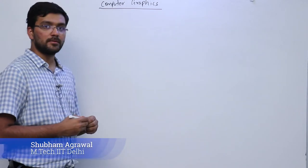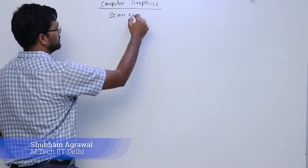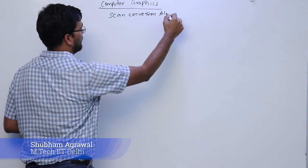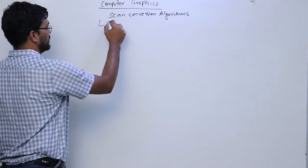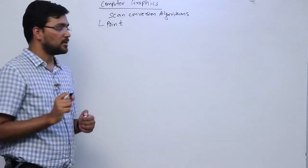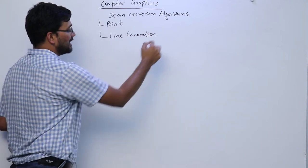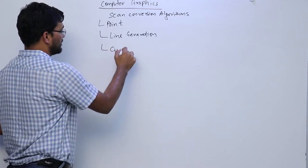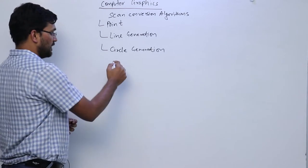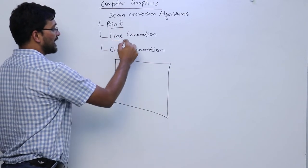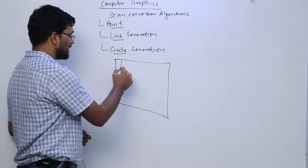Today we are seeing computer graphics. In computer graphics we will be seeing scan conversion algorithms. In scan conversion algorithms we have point — how to draw a point on our screen — then we have line generation algorithms, and after that we have circle generation algorithms. We will be seeing how a point, line, and circle gets painted on our computer screen.